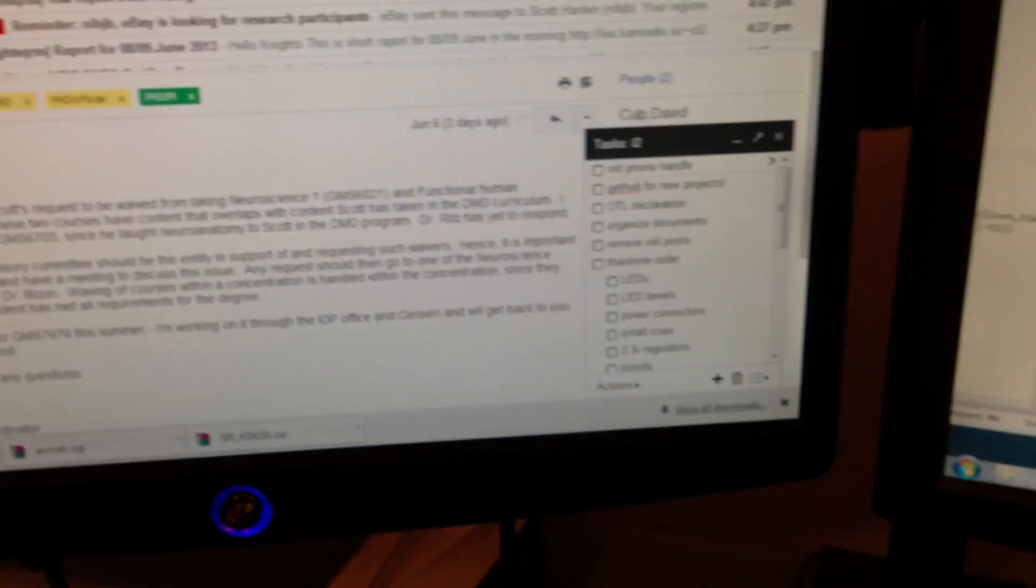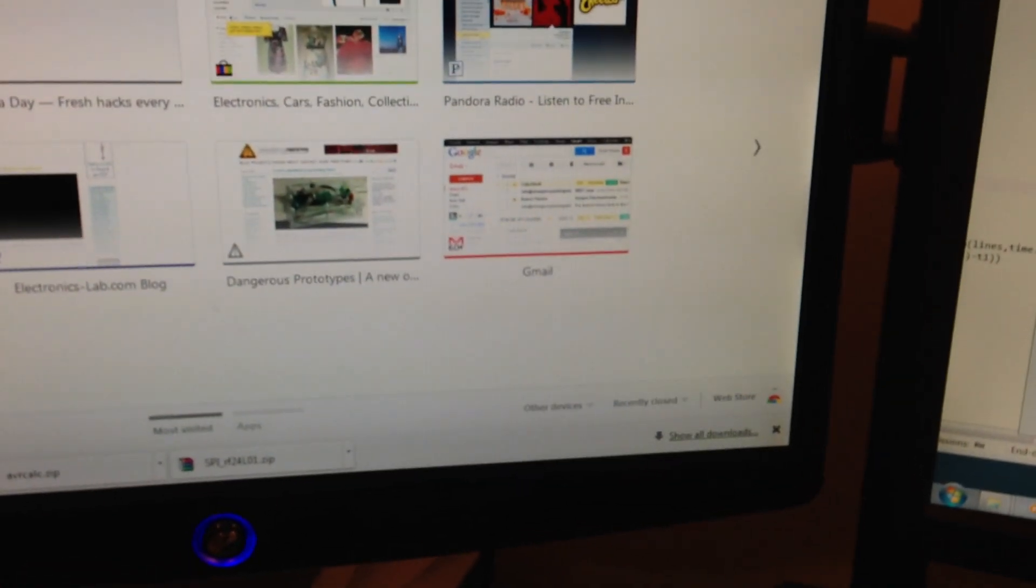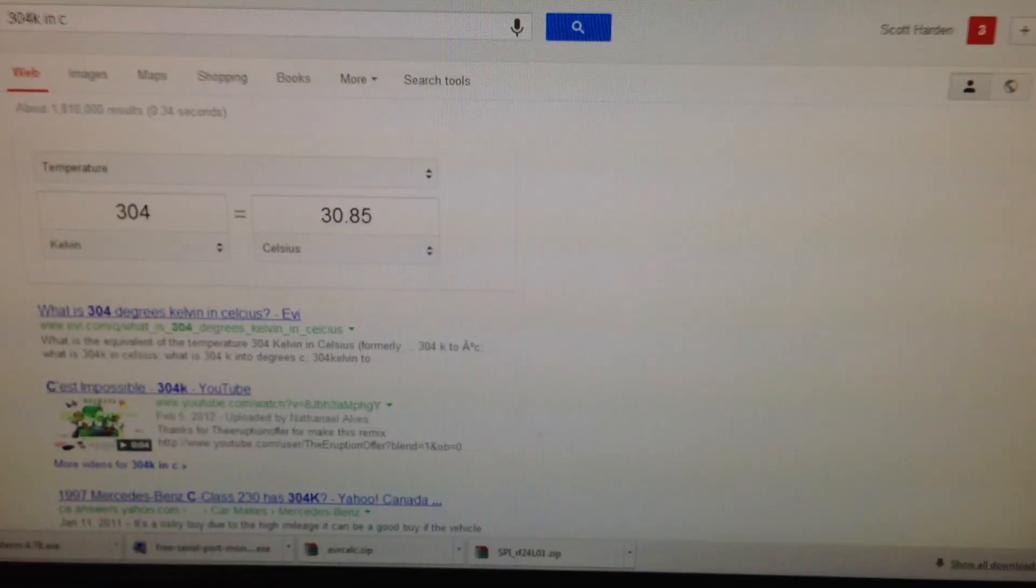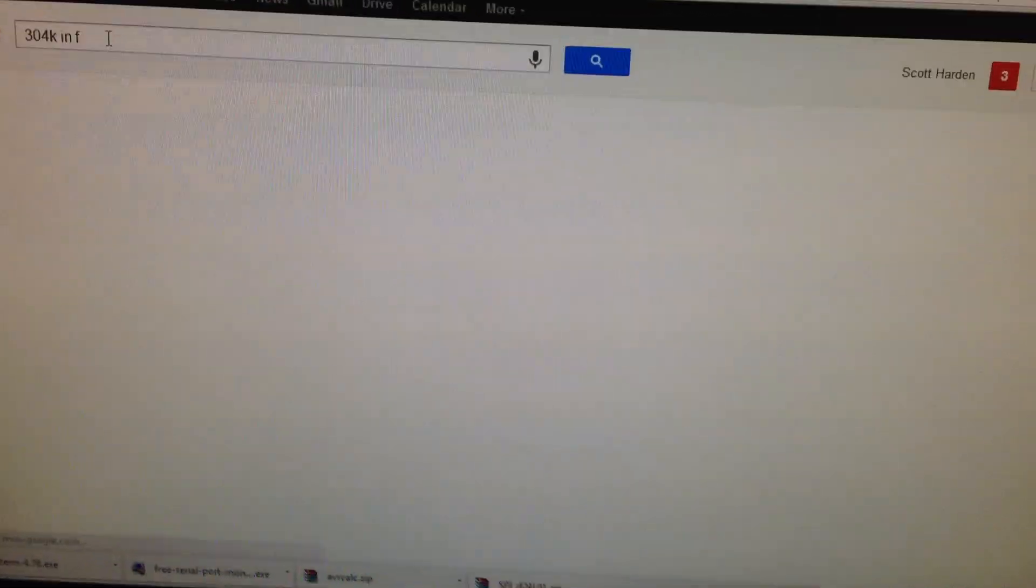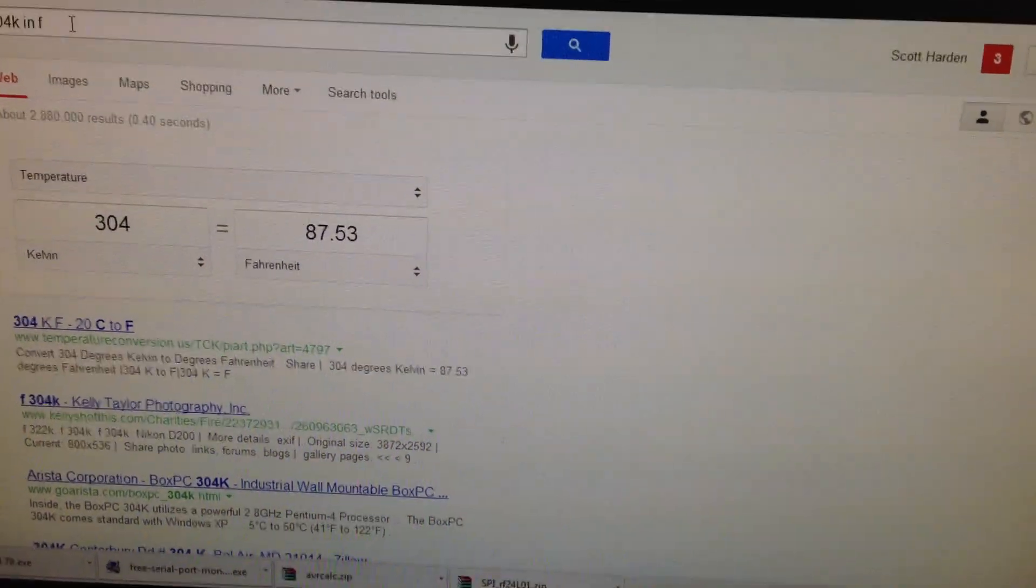Let's pop over here. Do 304 Kelvin in Celsius and also in Fahrenheit for the U.S. people. And this is about 87 degrees. It's kind of toasty in here. Got a lot of computers going. So that's the current temperature.